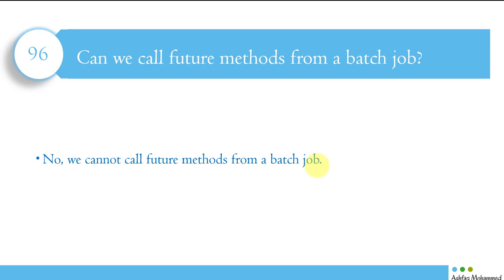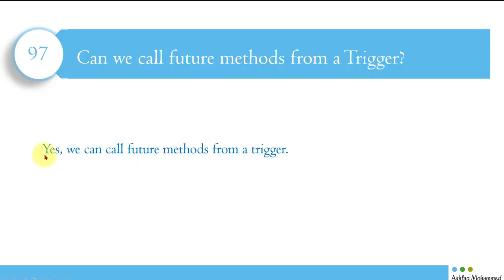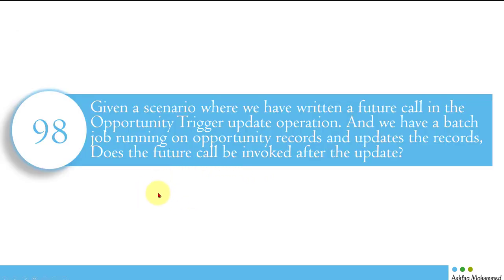Next: can we call a future method from a trigger? The answer is yes — we can call a future method from a trigger. So to summarize: we cannot call a future method from a batch job or from within another future method, but we can call a future method from a trigger. These are the three key rules to remember.